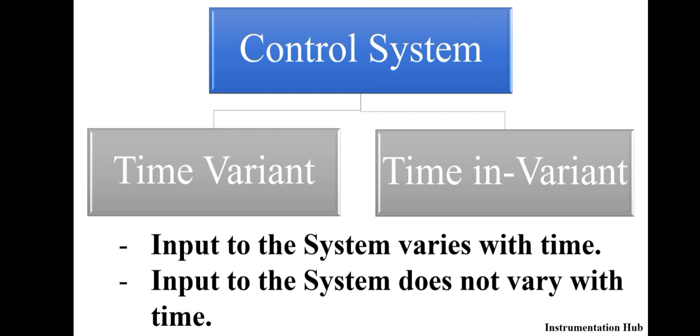Time-variant systems are complicated to design, whereas time-invariant systems are less complicated than time-variant systems. So these are the major differences between time-variant and time-invariant. I think you have got a basic idea about this type of control systems.